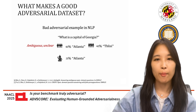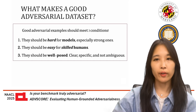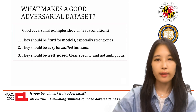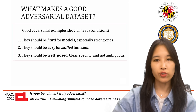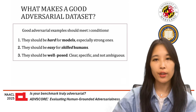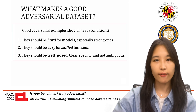Whatever approach we use to measure adversarialness should account for problematic questions, whether from ambiguity or false prepositions. To recap, a good adversarial example should meet three conditions. First, they should be hard for models, especially stronger ones. Second, they should be relatively easy for skilled humans. Third, they should be well-posed, clear, specific, and not ambiguous.